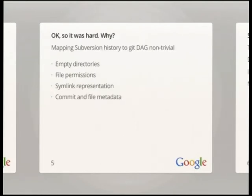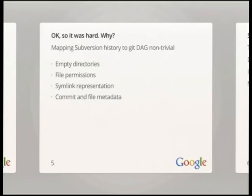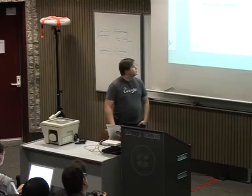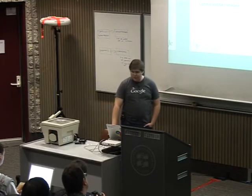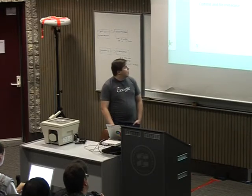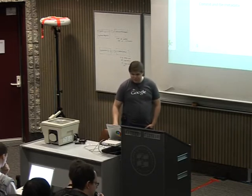So why was it so hard? Basically, there are some problems trying to map subversion history onto Git. First, the actual tree structure is not one-to-one due to the existence of empty directories within subversion. Second, subversion uses a particularly funky way of describing file permissions instead of the usual Unix-style bitmask that Git uses. Similarly, a funky representation for symlinks. And of course it has file metadata, which currently in Git there is no concept of. The commit metadata is completely different as well.